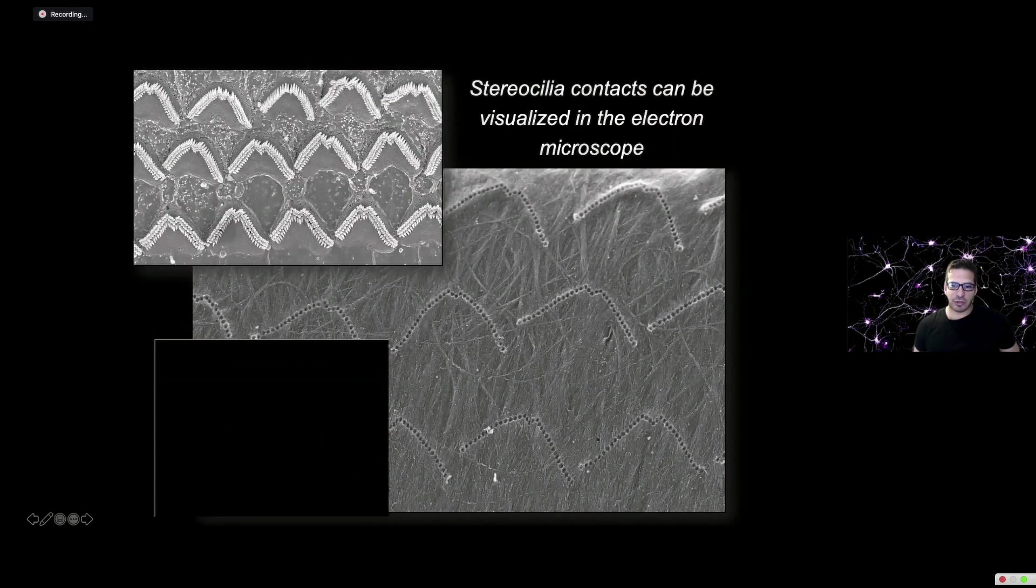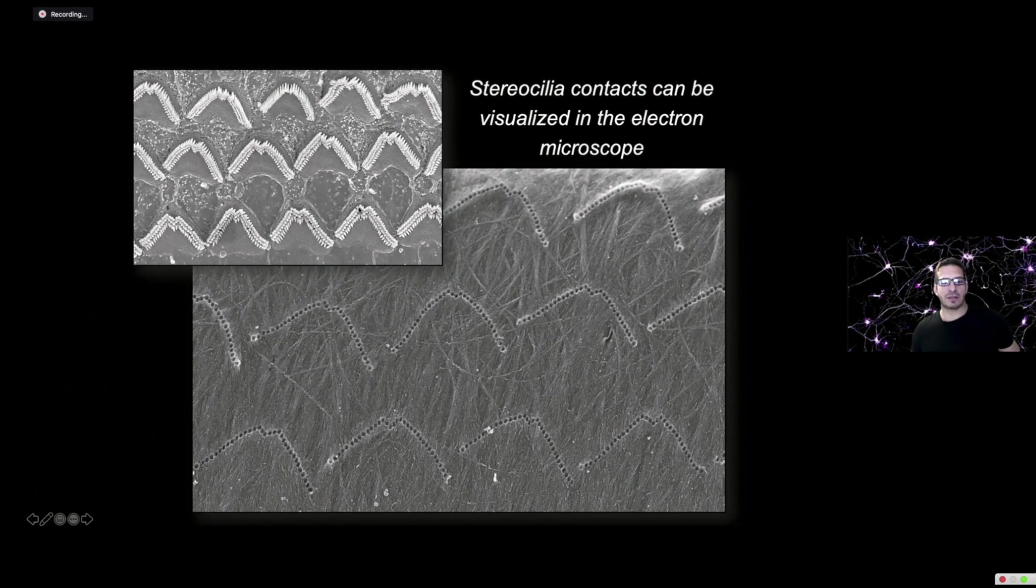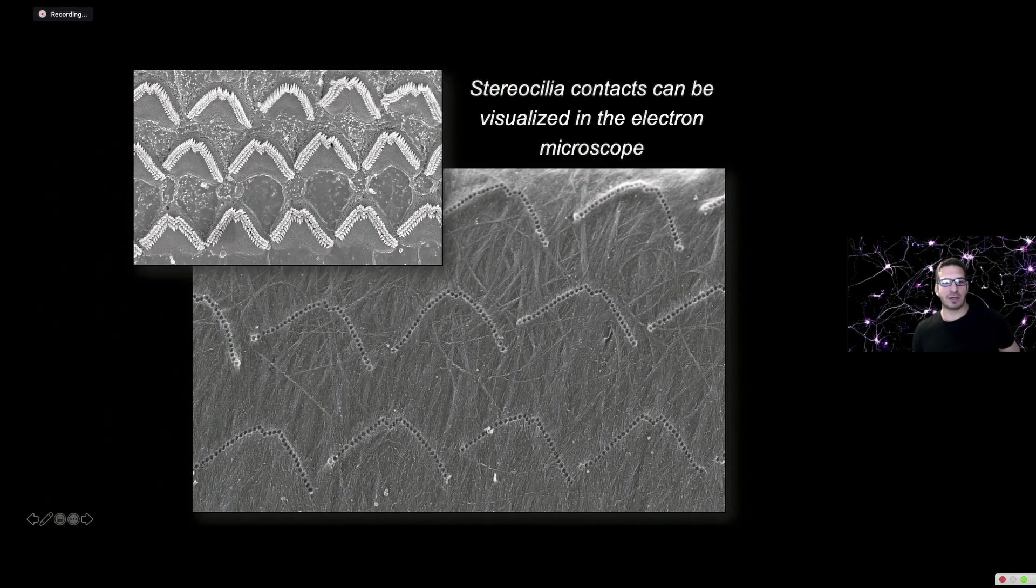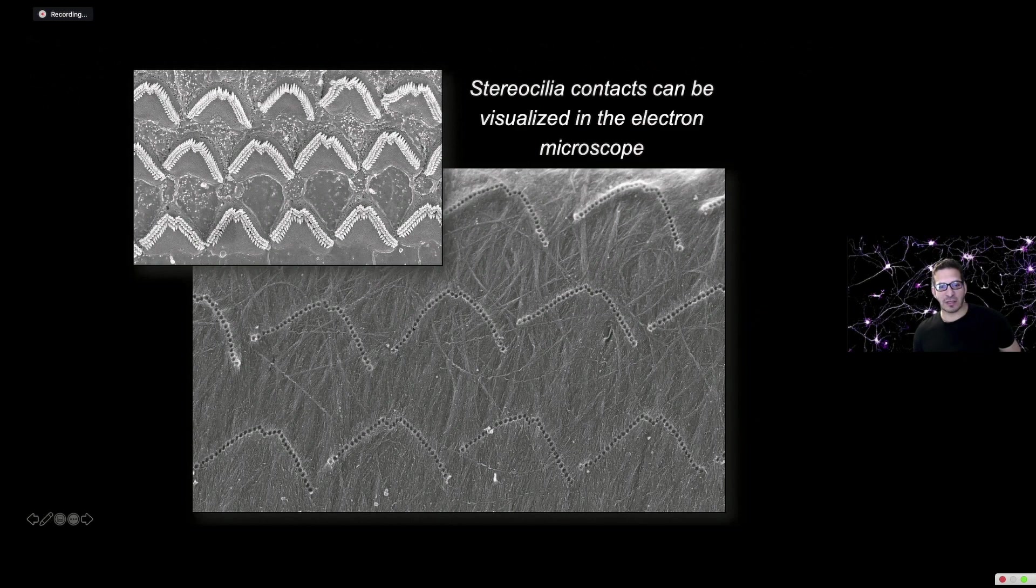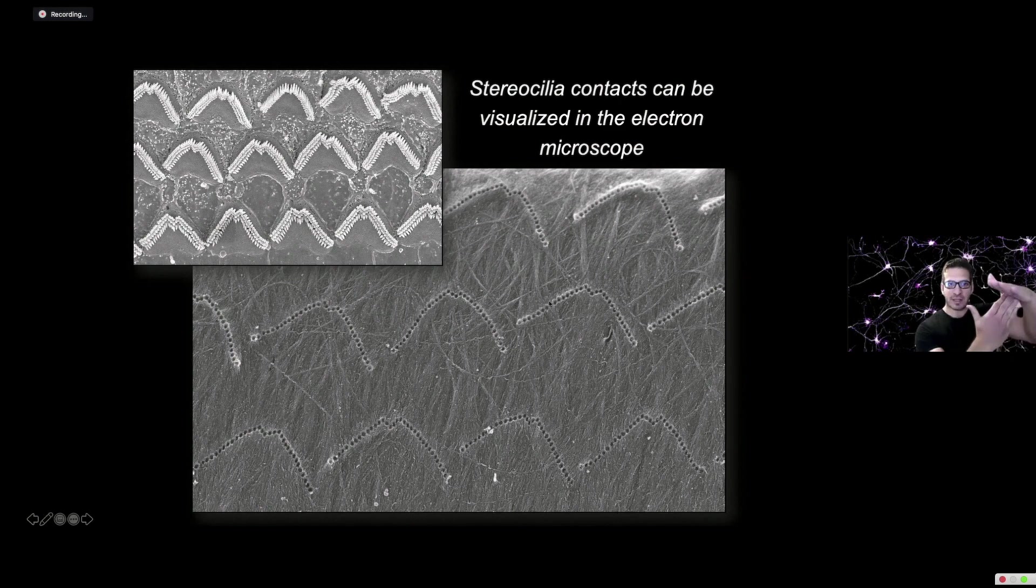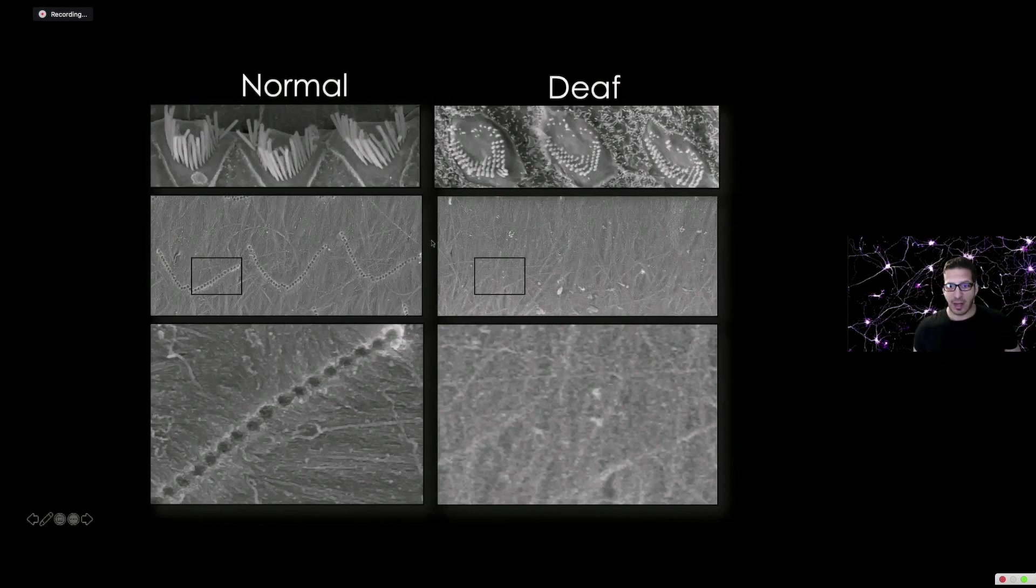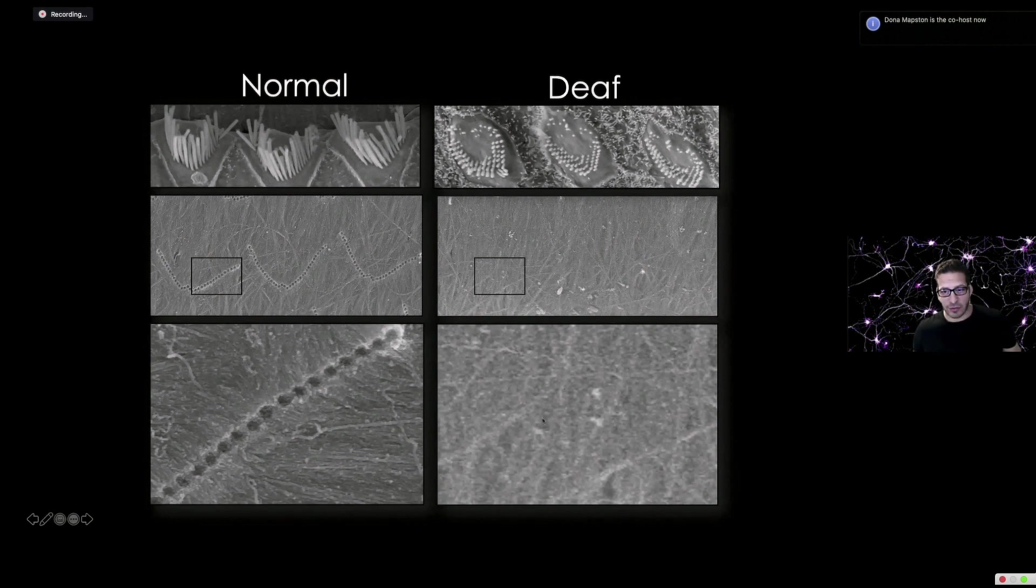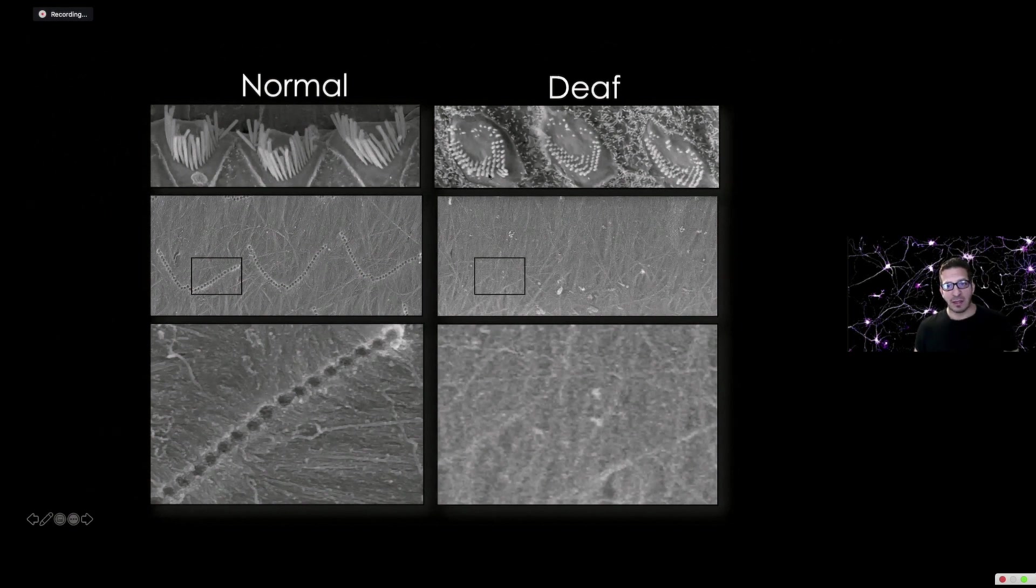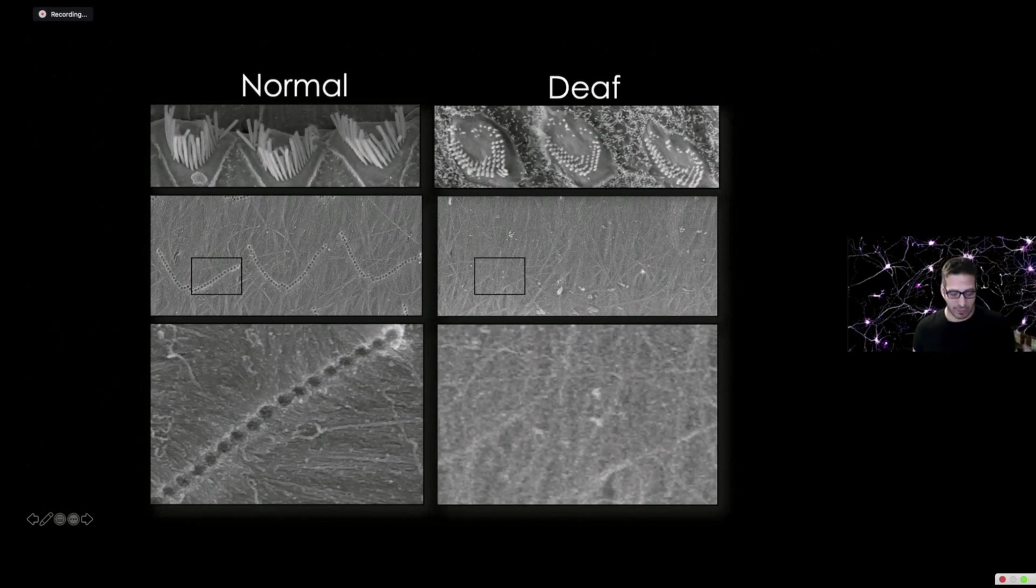We believe the reason they're deaf is because they're so short they can't touch the overlying tectorial membrane. One way to measure that is with imaging. The tallest hairs from each cell insert into the tectorial membrane. They form little imprints where they insert. In a normal person or animal, we can see the holes where they insert. In deaf animals, they don't have those holes anymore, supporting this hypothesis.